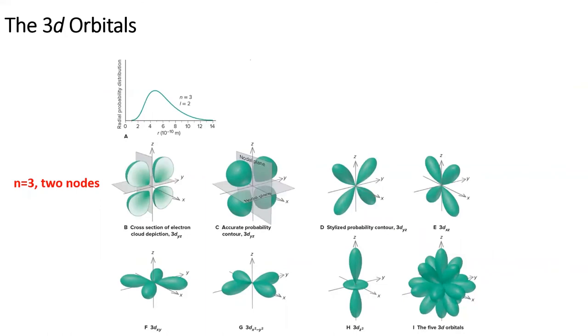As we move up to the d orbitals, things start to get more complicated. The d orbitals look like x's, except one that looks like a ring around a dumbbell. There are five d orbitals in each energy level, starting at n equals three. The five d orbitals each have two nodal planes.